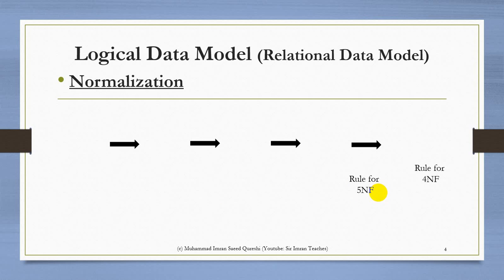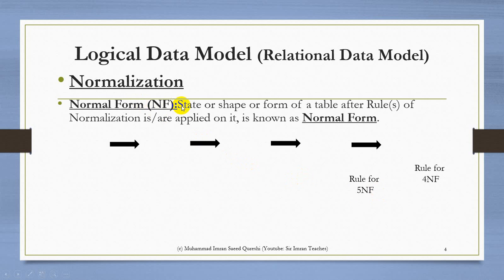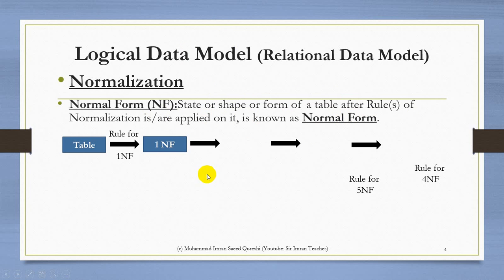We have a concept of a normal form. Whenever we apply a normalization rule on a table and it gets a new shape or form, we say it is in a certain normal form. The definition: the state, shape, or form of a table after the rules of normalization are applied on it is known as a normal form. For example, if we apply the first rule of normalization, the table gets a new form known as 1NF.